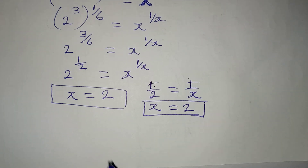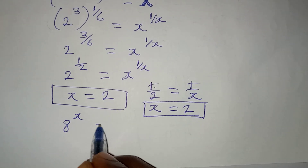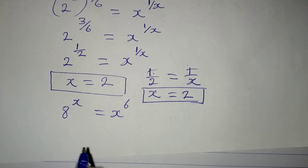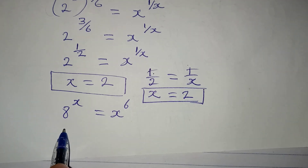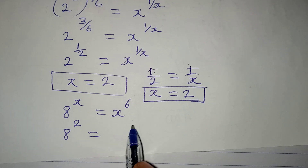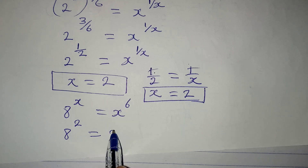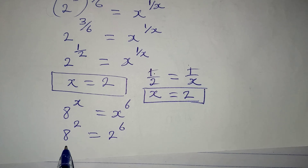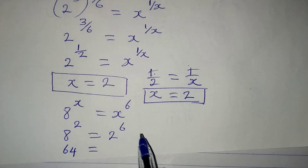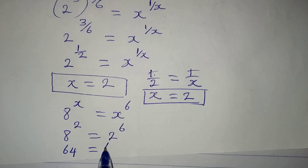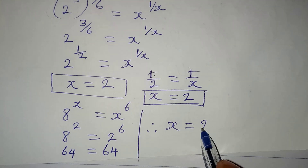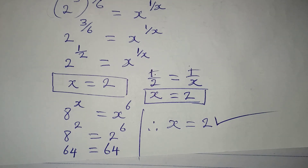Let's bring back the original equation: 8 to the power of x equals x to the power of 6. Let's verify: with x equal to 2, we have 8 to the power of 2 on the left, and 2 to the power of 6 on the right. 8 to the power of 2 is 8 times 8, which gives 64. And 2 to the power of 6 is 2 multiplied six times, which also gives 64. Therefore, x is equal to 2 and it is correct. Thank you for watching.